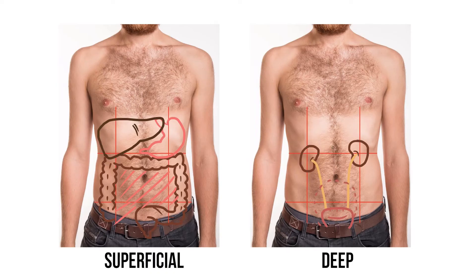The pancreas sits in the upper umbilical region with its tail passing laterally towards the left hypochondriac region. At this point it meets the hilum of the spleen, which is tucked up under the left side of the rib cage.